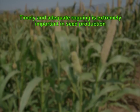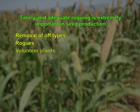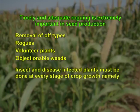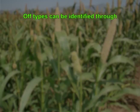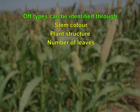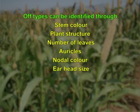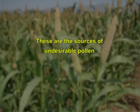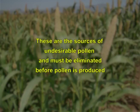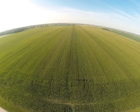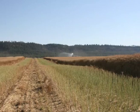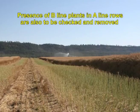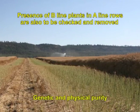Timely and adequate roguing is extremely important in seed production. Removal of off-types, rogues, volunteer plants, objectionable weeds, and insect- and disease-infected plants must be done at every stage of crop growth — vegetative, flowering, and harvesting — to avoid genetic and physical contamination. Off-types can be identified through stem color, plant structure, number of leaves, auricles, nodal color, ear head size, shape, and seed color. These are sources of undesirable pollen and must be eliminated before pollen is produced. In the hybrid seed production plot, undesirable plants in both A and R line rows that differ from true-to-type plants are to be removed. Pollen shedders — presence of B line plants in A line rows — must also be checked and removed to maintain genetic and physical purity of seeds.